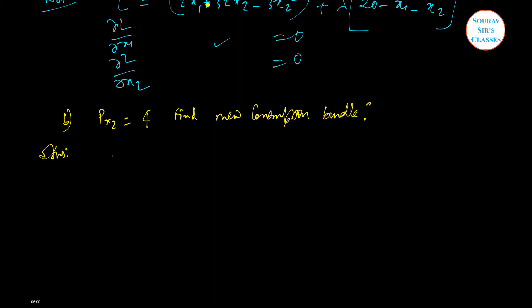In the new consumption bundle, the solution is not at the corner again, because at x2 equal to 0, MRS will be 1 by 16, that is less than 1 by 4, which is now the price ratio.